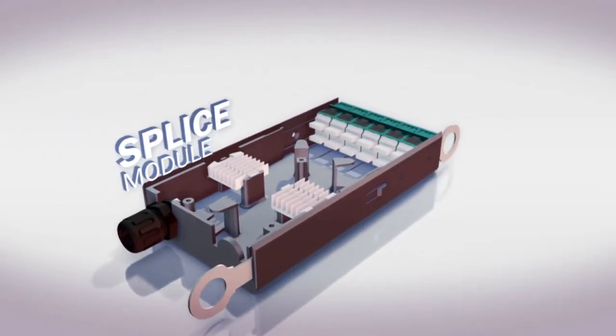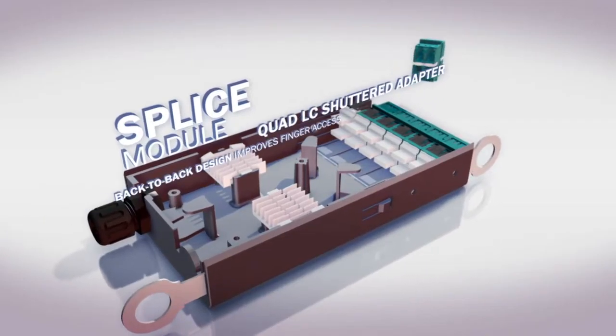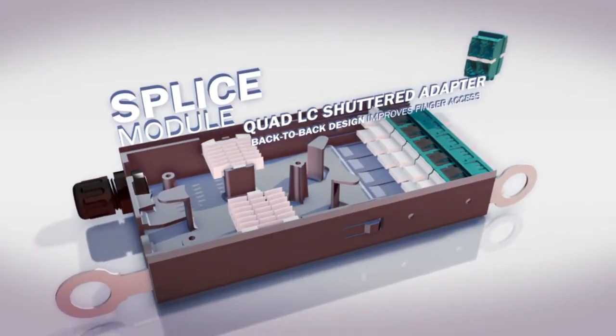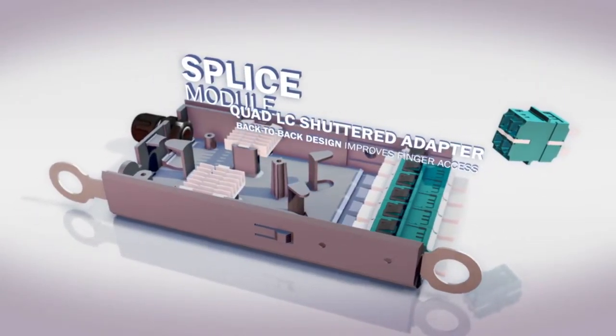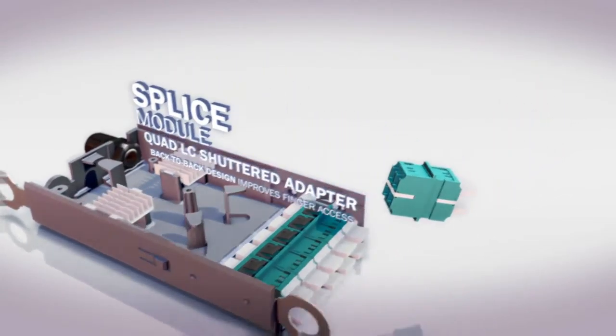The third configuration is the Splice Module. The Splice Module houses up to 12 splice positions and offers complete on-site flexibility to terminate fibers to meet required cable lengths.